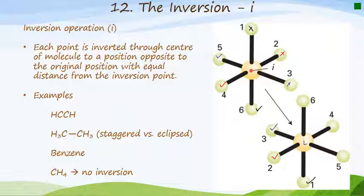There are a number of examples that show the inversion operation. The first is acetylene — H–C with a triple bond — and you can see that it has a center of inversion right in the center. The second example is the staggered version of ethane, which we'll do on the next slide. Benzene also has a center of inversion. And I'm going to show you an example with methane, where it may look like we have a center of inversion, but there is none.